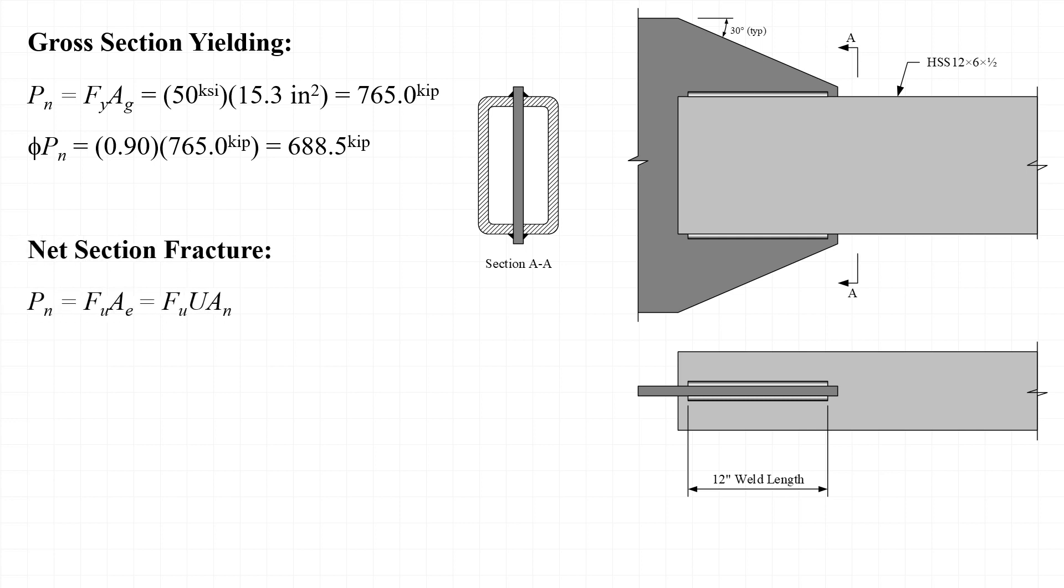Next, we'll look at net section fracture strength, and P sub n, the nominal strength, is equal to F sub u times A sub e, where A sub e is the effective net area of the section, taken as u times A sub n, where u is the shear lag reduction coefficient and A sub n is the net area.